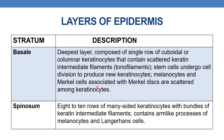The next layer is stratum spinosum, which is composed of 8 to 10 rows of many-sided keratinocytes with bundles of keratin intermediate filaments. It contains arm-like processes of melanocytes and Langerhans cells.